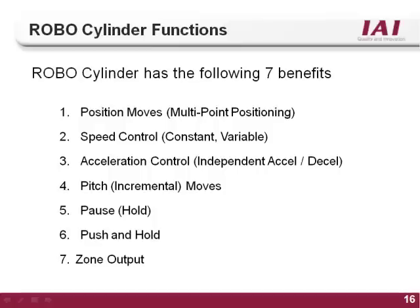We have now gone over the seven functions of the RoboCylinder controller: multiple positioning, speed control, acceleration-deceleration control, pitch or incremental type moves, the pause and hold feature, the push and hold feature, and the zone output. You should now be able to use the RoboCylinder software to implement these seven functions. If you have any questions, please contact your local IAI office.